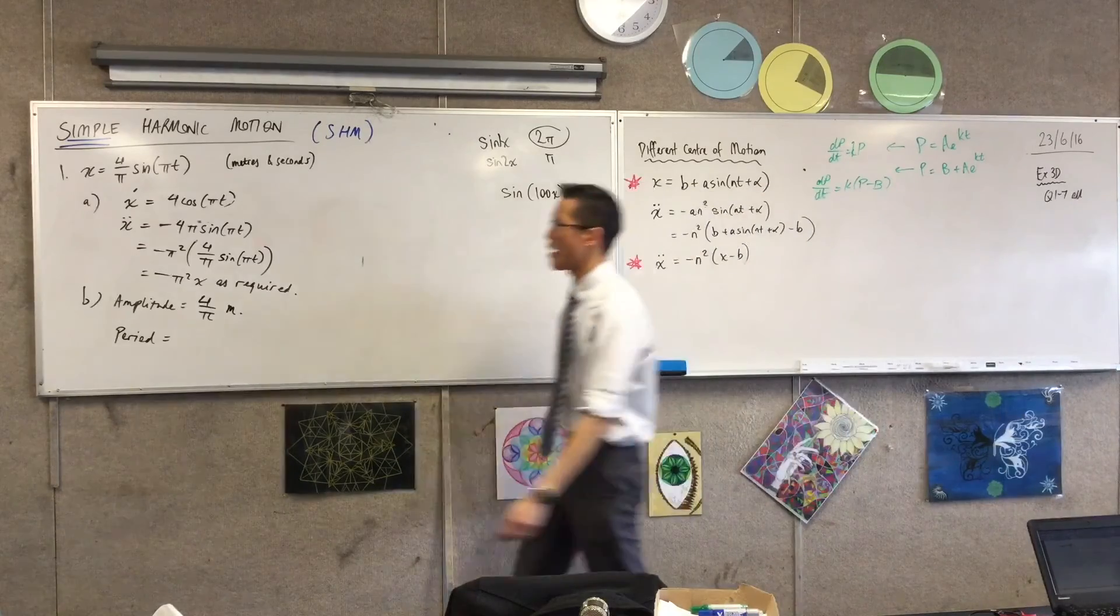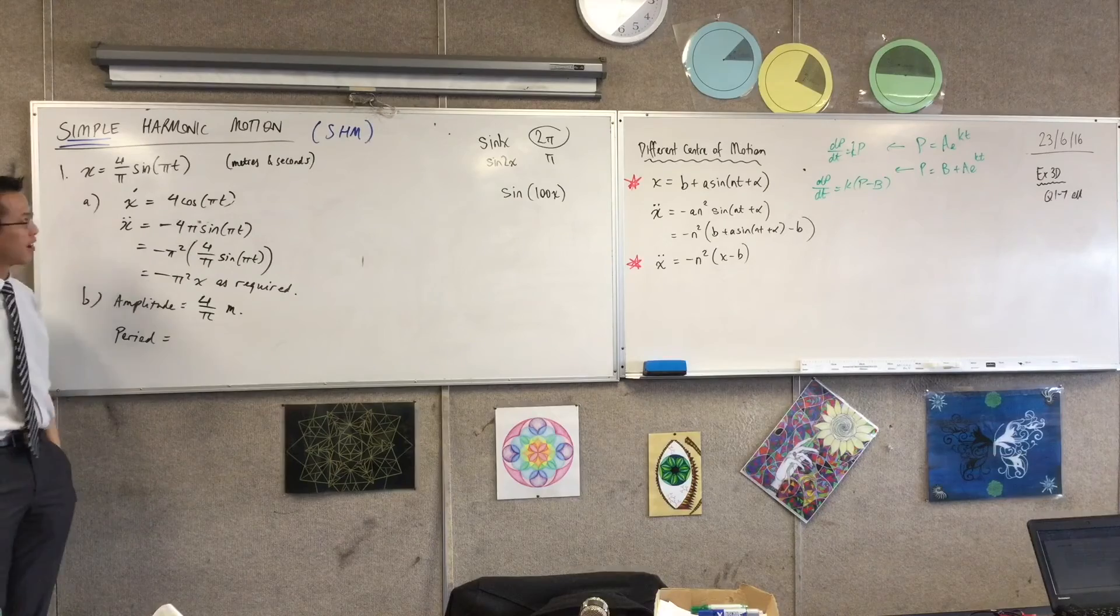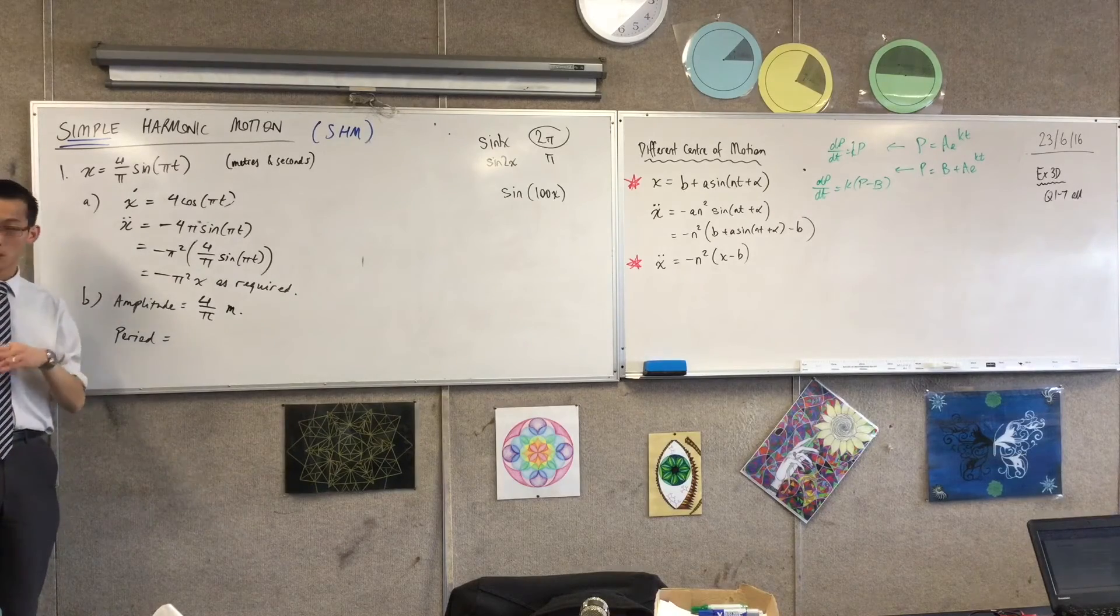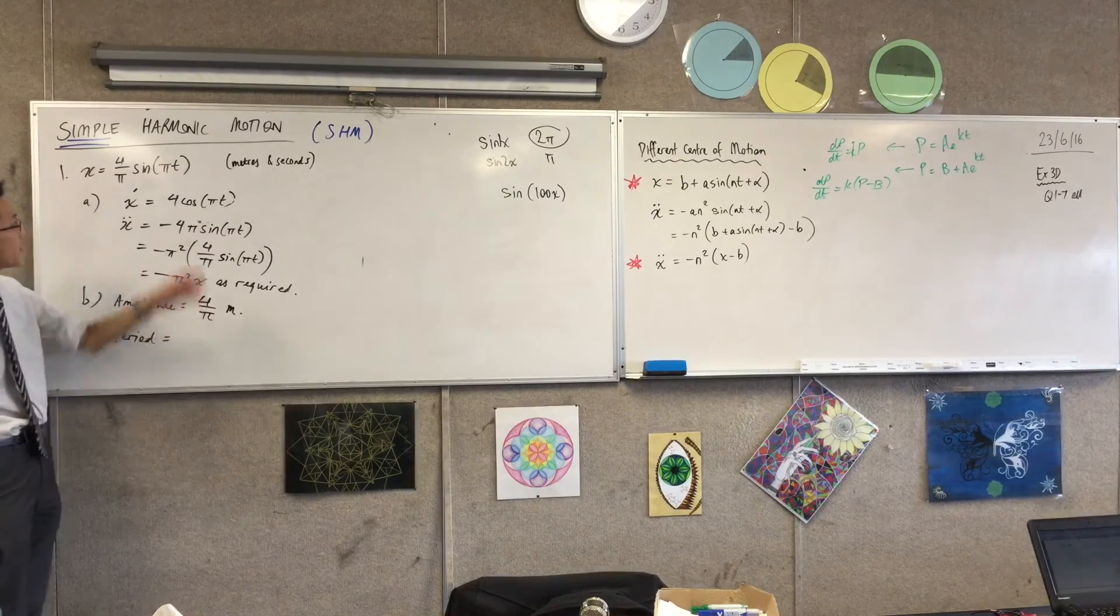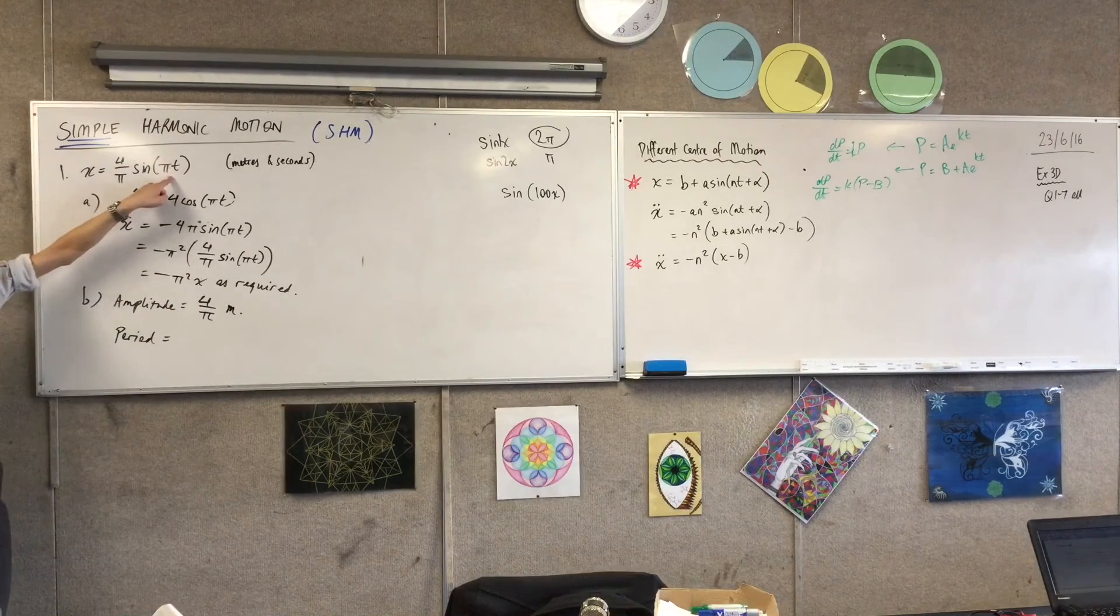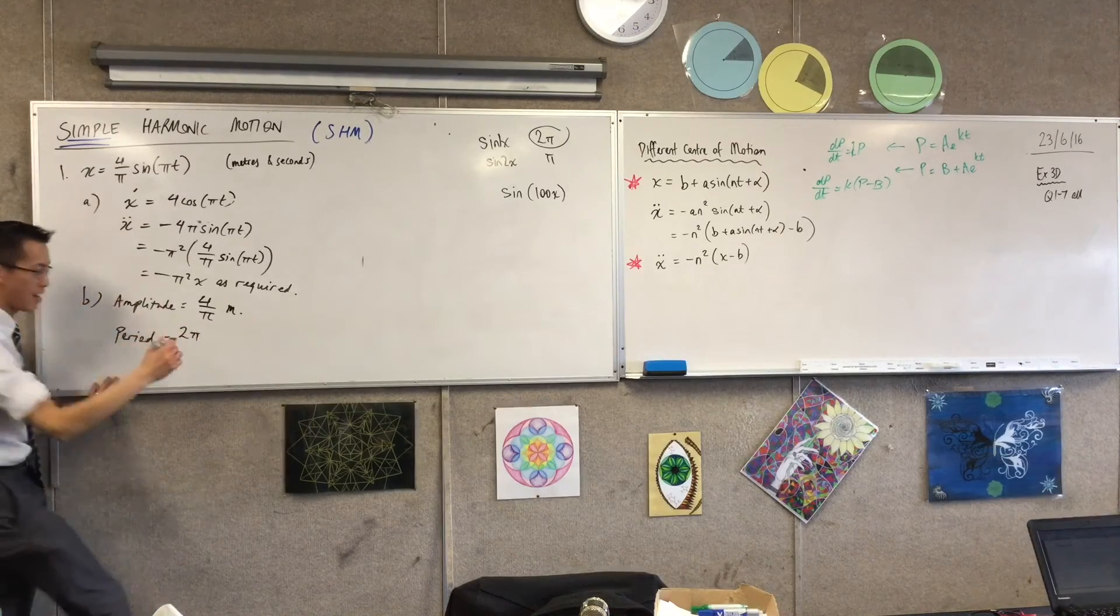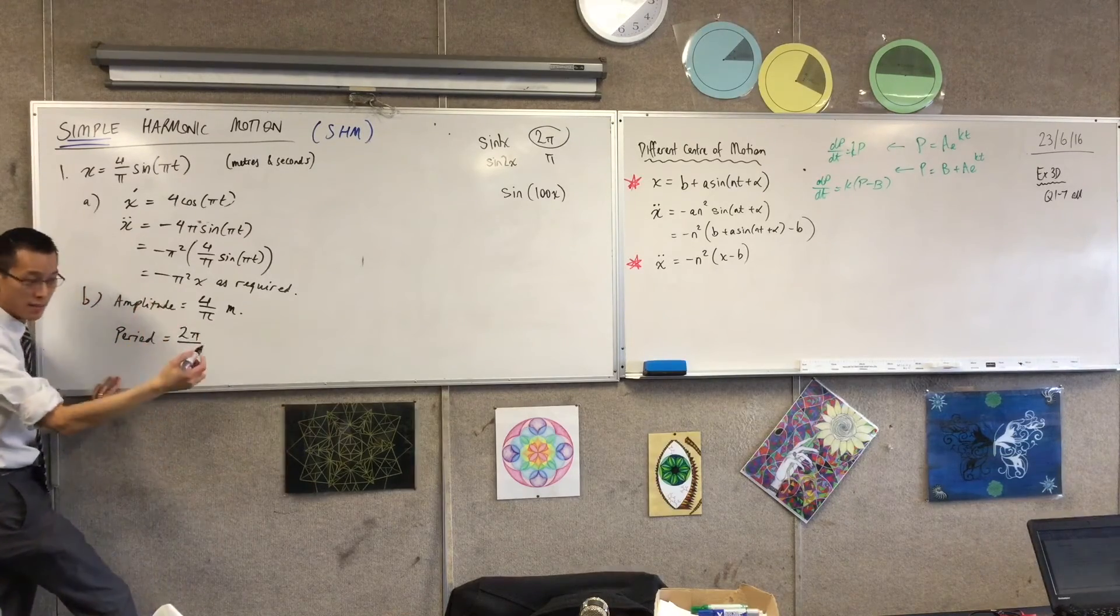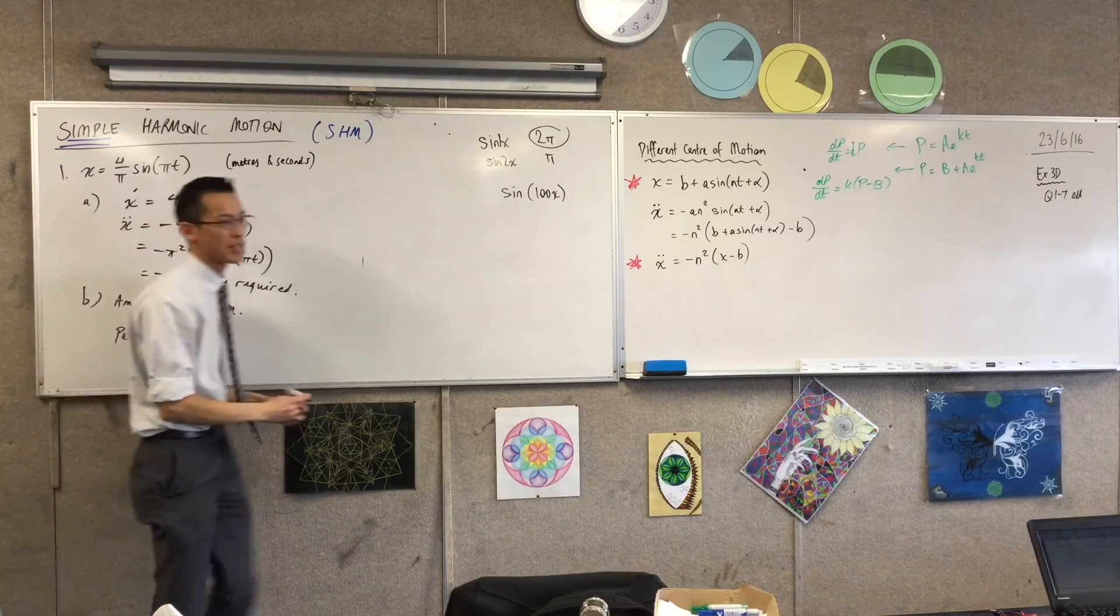From naught to two pi, right, I've got pi cycles. That's a bit weird, because this is trying to get us away from having pi in our units, right? So I'm going to go back to how to get that number, is two pi on n, which is pi. So the period is two seconds. Does that make sense?